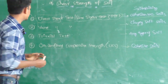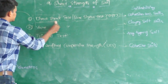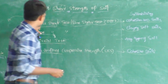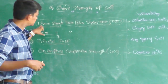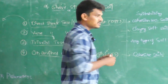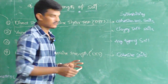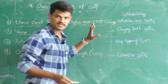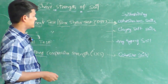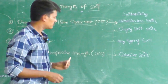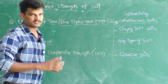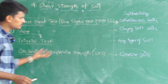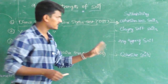Shear strength can be found using four different methods: direct shear test, vane shear test, triaxial test, and unconfined compressive strength. The suitability varies with the type of soil. Direct shear test is suitable for cohesionless or sandy soils; vane shear test is suitable for clay soils; triaxial test is suitable for basically all types of soils; and unconfined compressive strength (UCS) is suitable for cohesive soils only, that is clay soils.